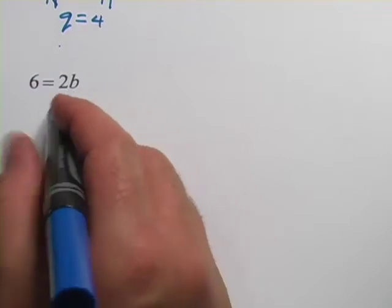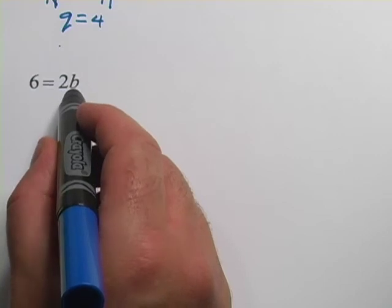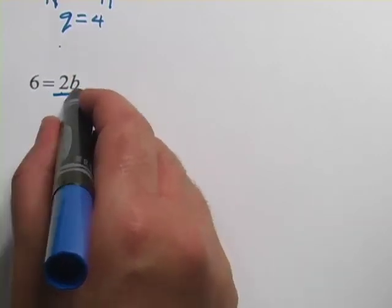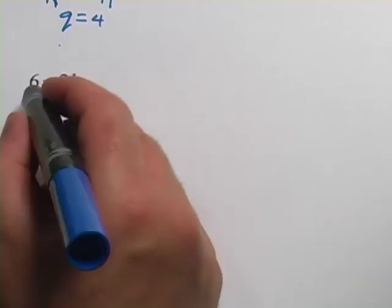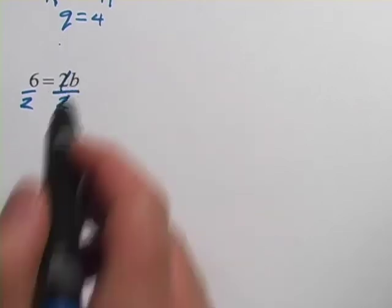If you want to do it the algebra way, you'd say, how do I undo whatever's being done to this variable here to get it by itself? And since it's being multiplied by 2, I would divide by 2. But I have to do it to both sides because that's the rules of algebra. On this side, the 2's canceling. You just get a b.